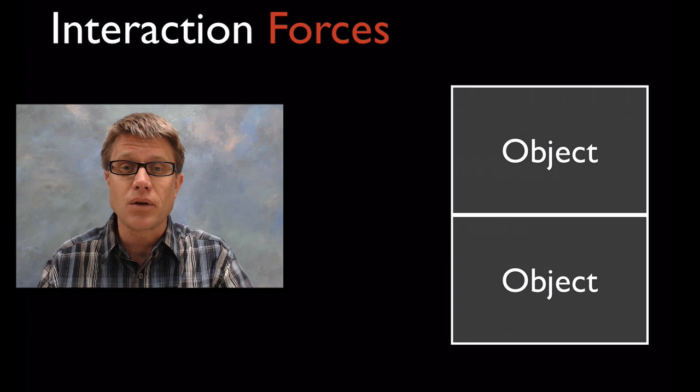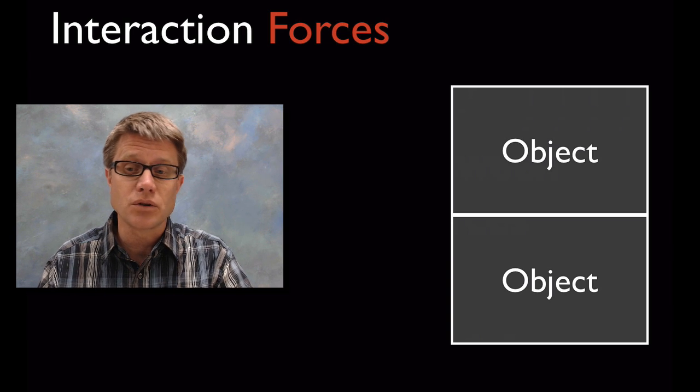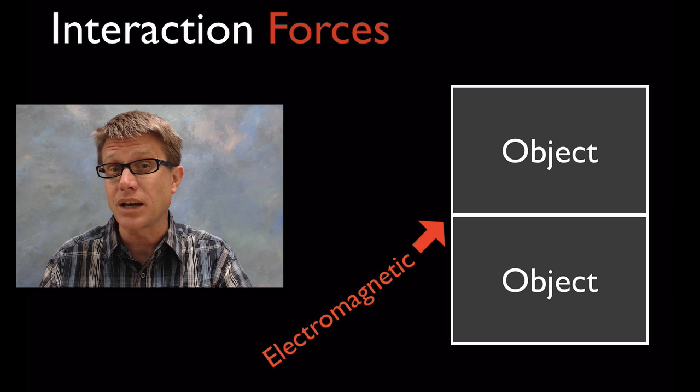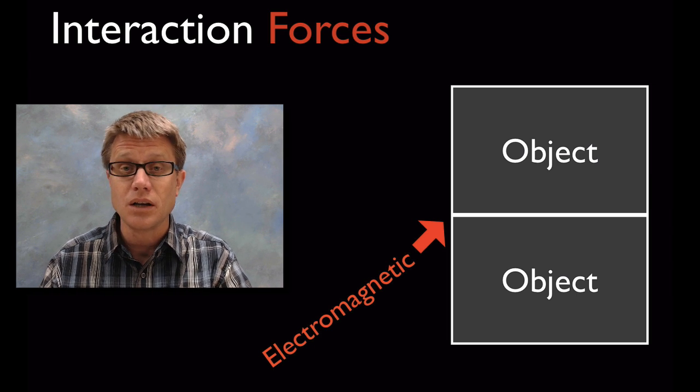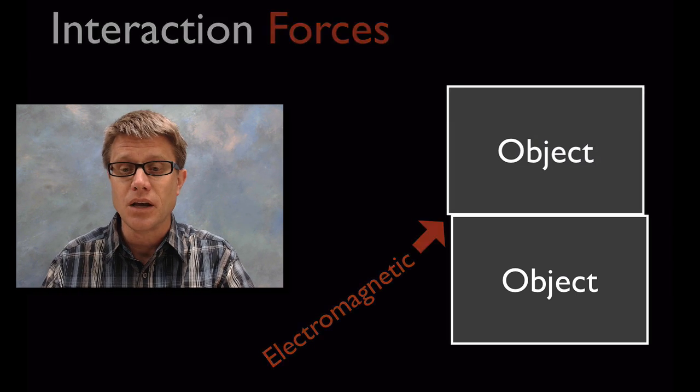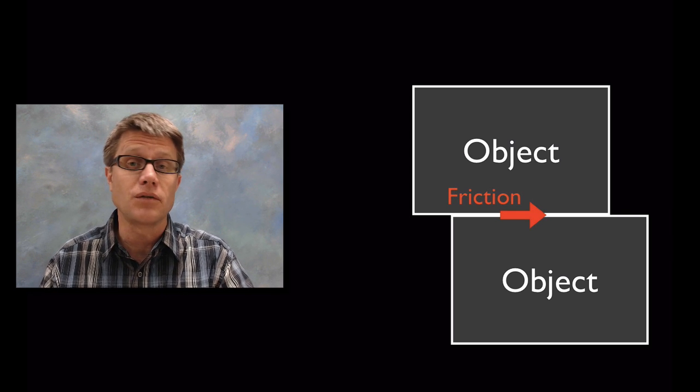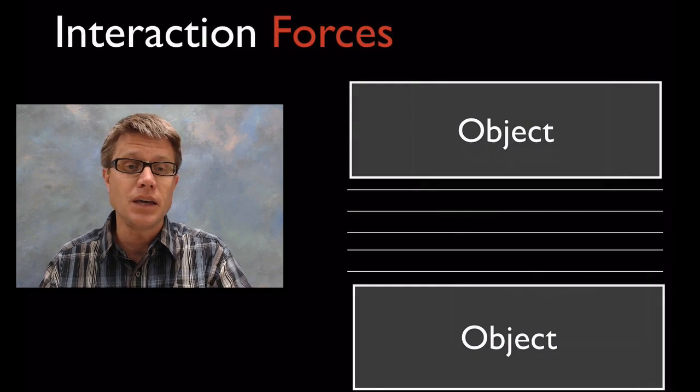And so in review, what are some of the interaction forces? We can have interaction forces when objects are touching. Like these objects right here. There's going to be an electromagnetic force between the two. It's keeping one on top of the other. And as we slide one on top of the other it's going to generate a frictional force. And that energy can eventually be transferred into heat.